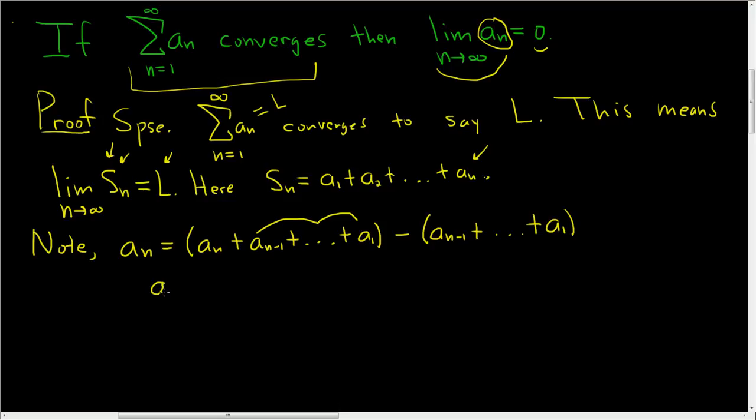So a sub n is really equal to, well, all of this is S sub n. And all of this is S sub n minus 1. So this is S sub n minus S sub n minus 1.